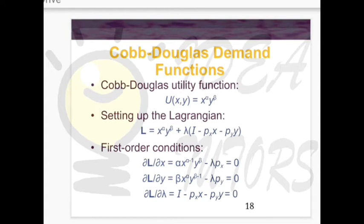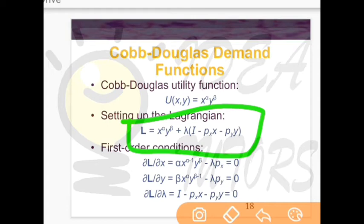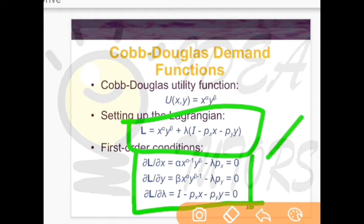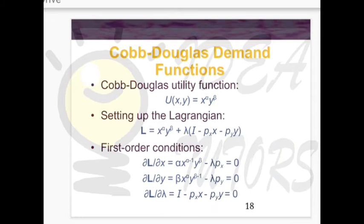Now we will find the quantities x-star and y-star at which the consumer's utility is maximum. For this, we use partial derivatives. We take partial derivatives of equation L with respect to x, y, and lambda, giving us three equations. This requires basic knowledge of differentiation and how to calculate partial derivatives.